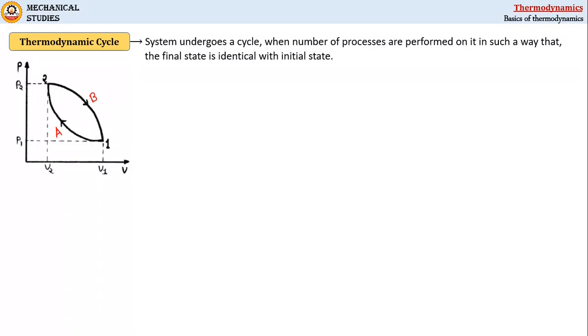Thus the two processes that comprise the cycle will be represented as 1-A-2, and the second process from 2 to 1 through B will be represented as 2-B-1.